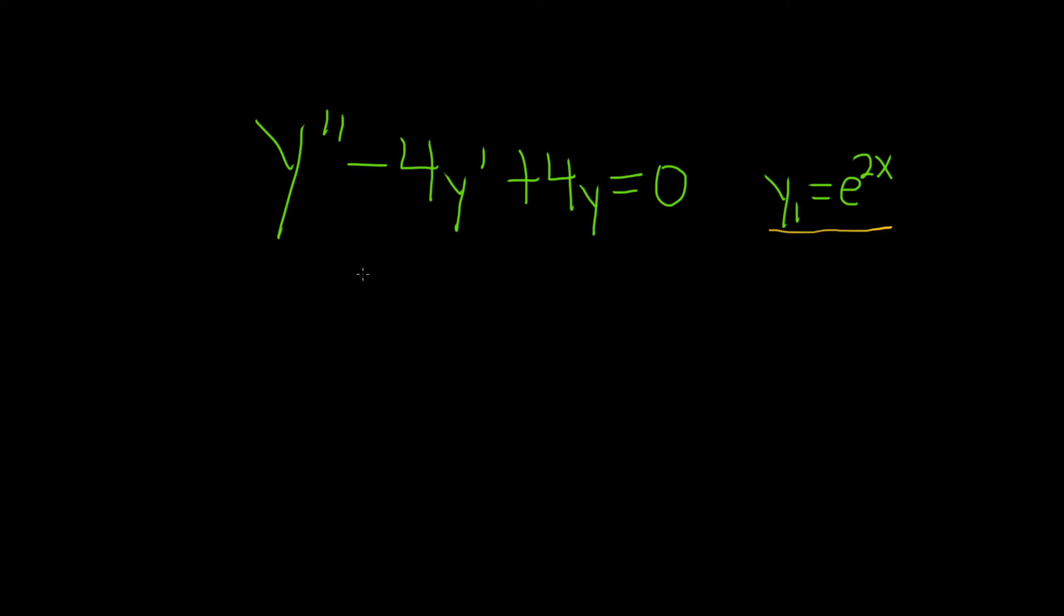So the formula for the other solution is y sub 2 equals y sub 1 of x times the indefinite integral of e to the negative integral of p of x dx, like this, all over y sub 1 of x squared.